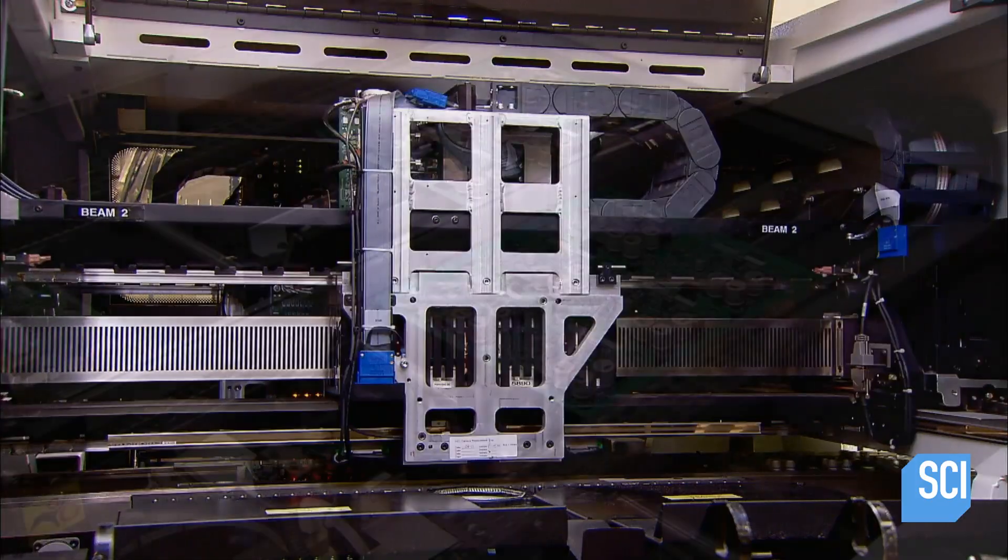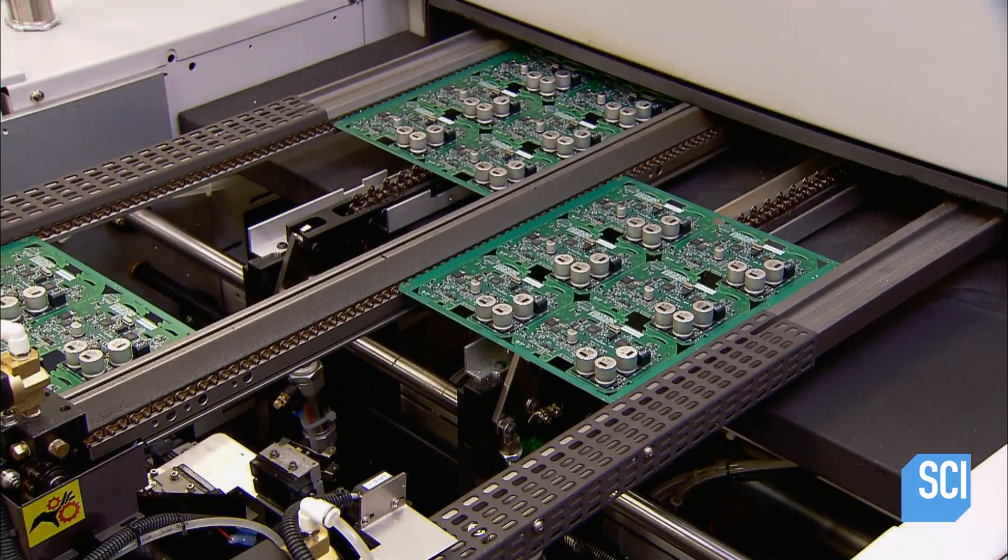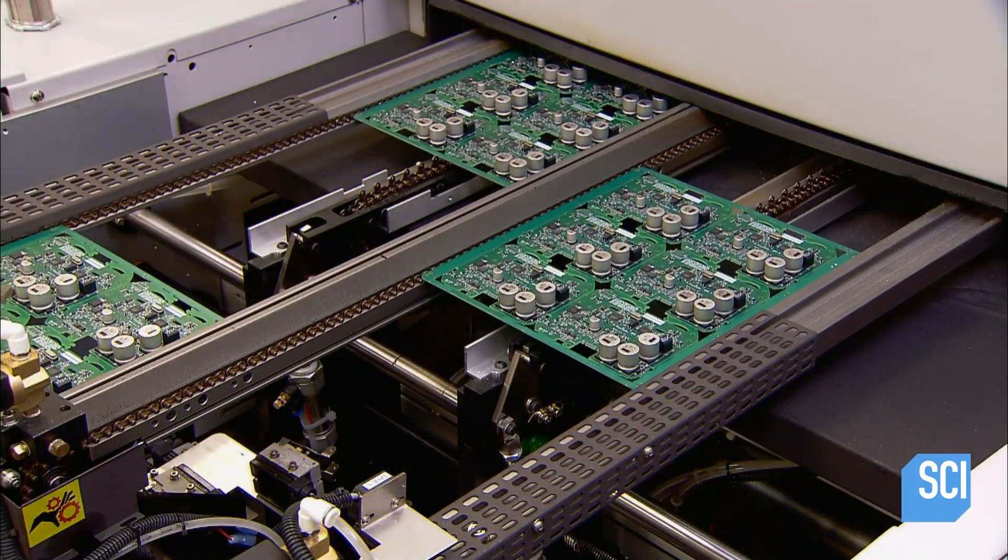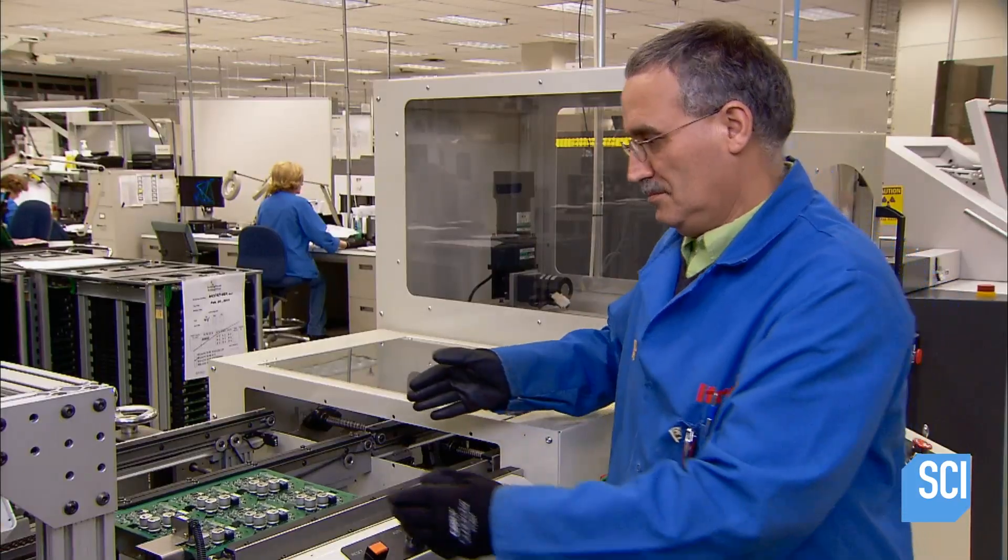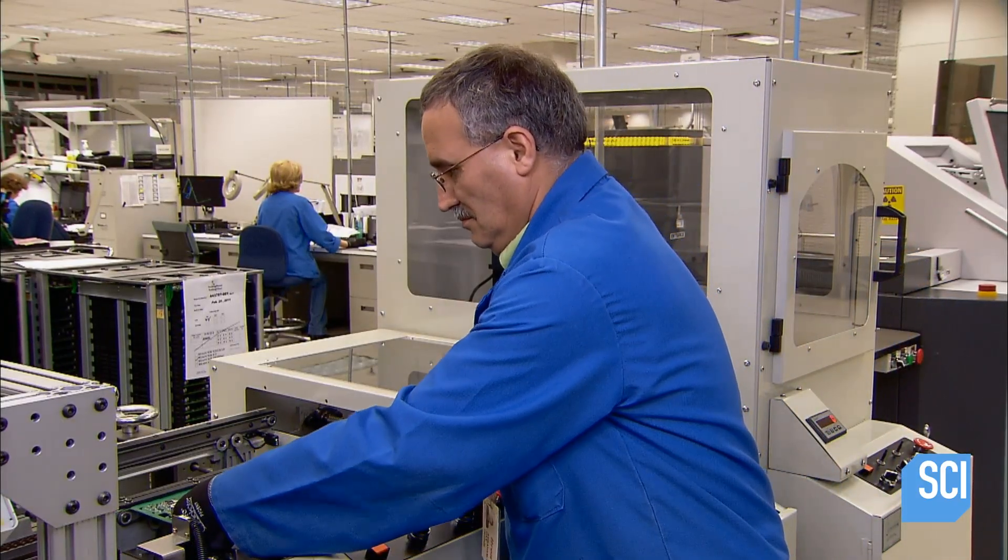The boards now travel through a soldering oven. The precision-controlled temperature, peaking at 468 degrees Fahrenheit, melts, then cools the solder paste, fusing all the components to the board.